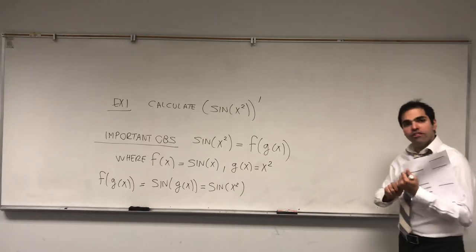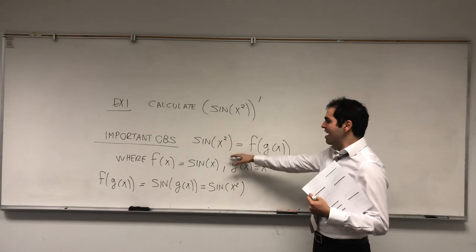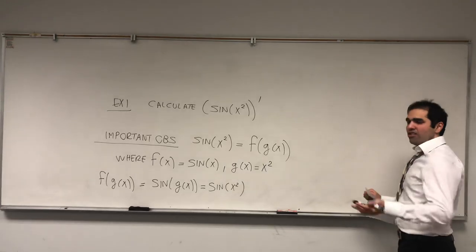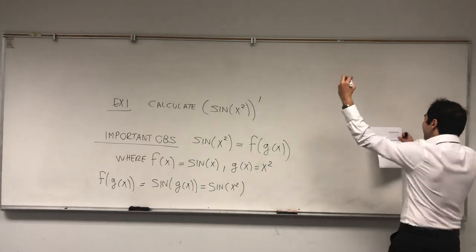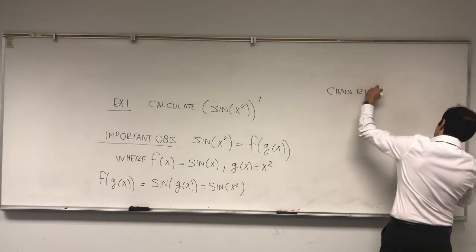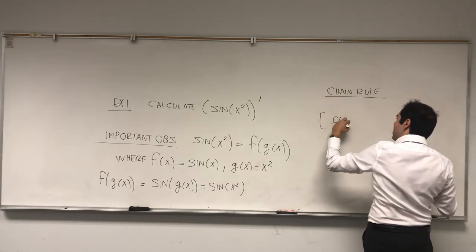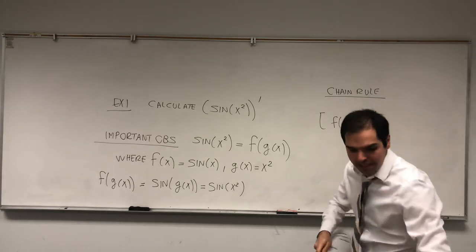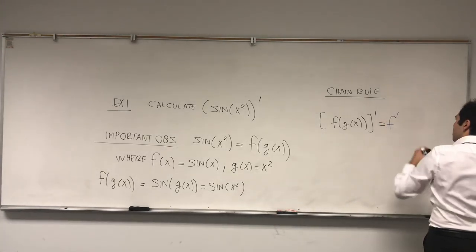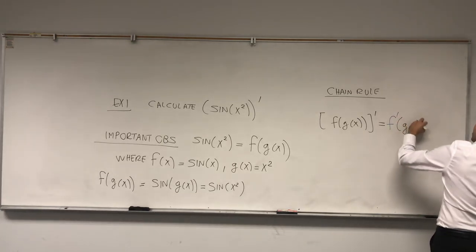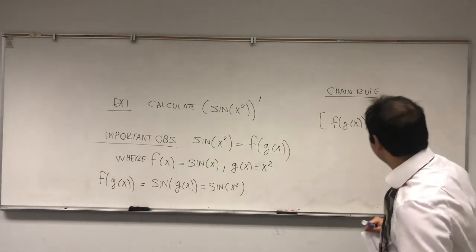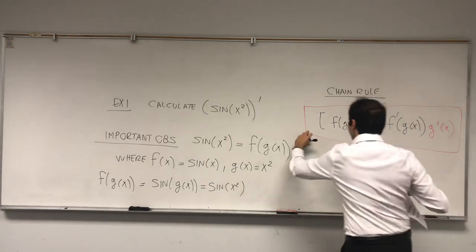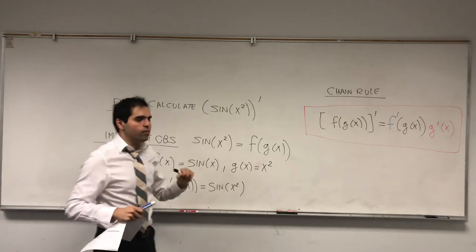In particular, the rule I will state very soon allows you to differentiate the composition of two functions, which is great because most functions we see in real life are compositions. So without further ado, let me state the chain rule — or as I like to call it, the chen rule. All it says is that to differentiate the composition f composed with g, you first differentiate the outside function, so f prime — but not f prime of x, but f prime of g of x — and then you differentiate the inside function, times g prime of x.